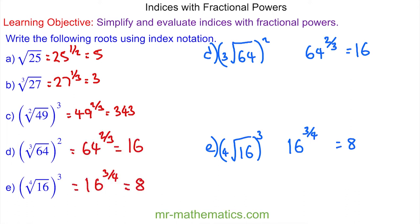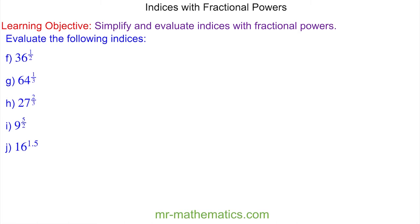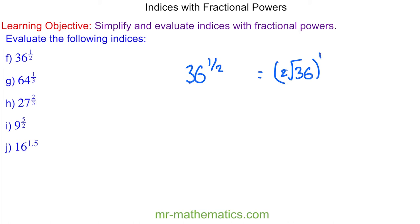Now we're going to work the problem backwards, writing each of these using the root symbol. For question f, we have 36 to the power of one half. The two in our denominator is the second root of 36, and this is raised to the power of one. We don't need to include the one, so it is the square root of 36, which is six.